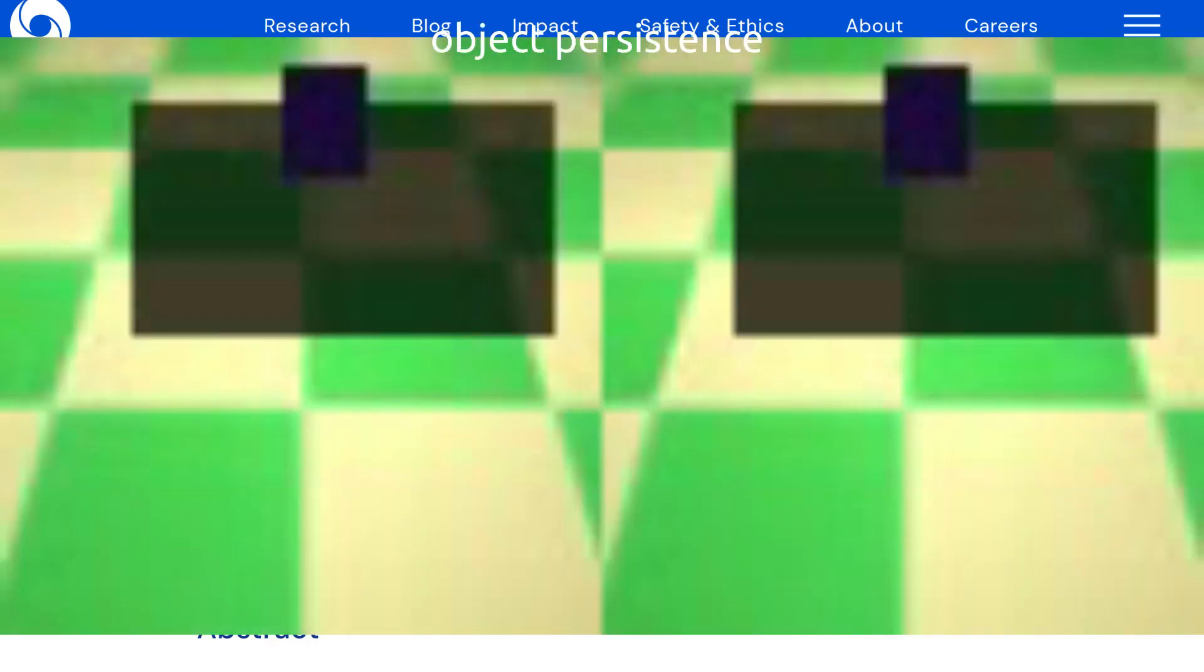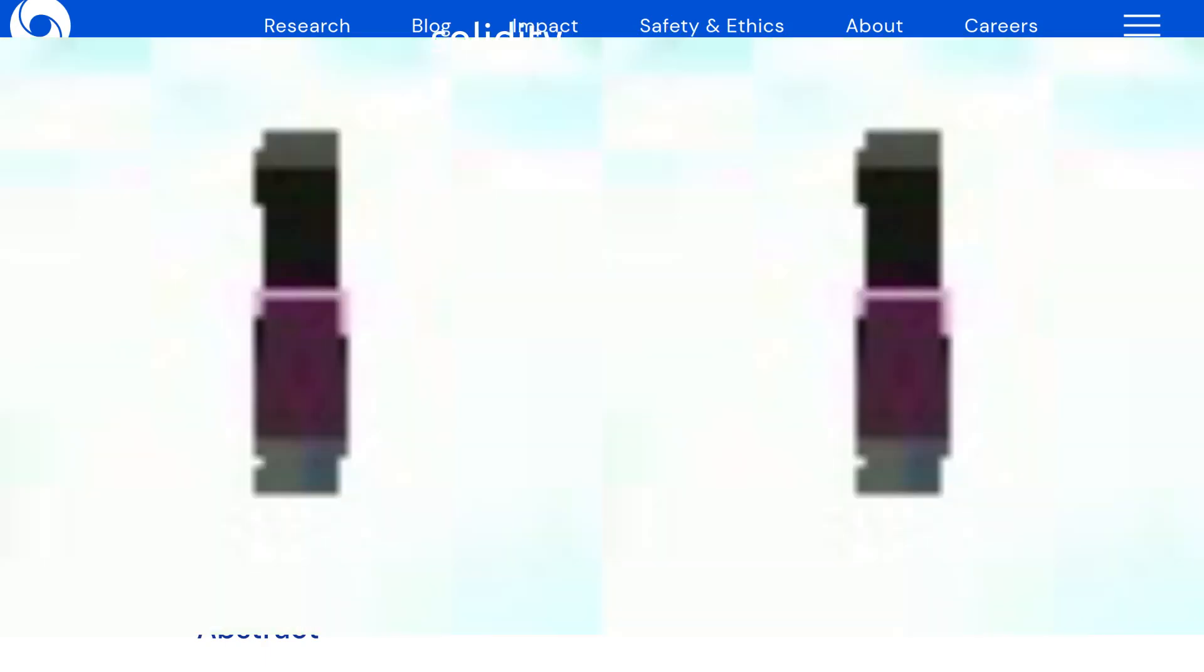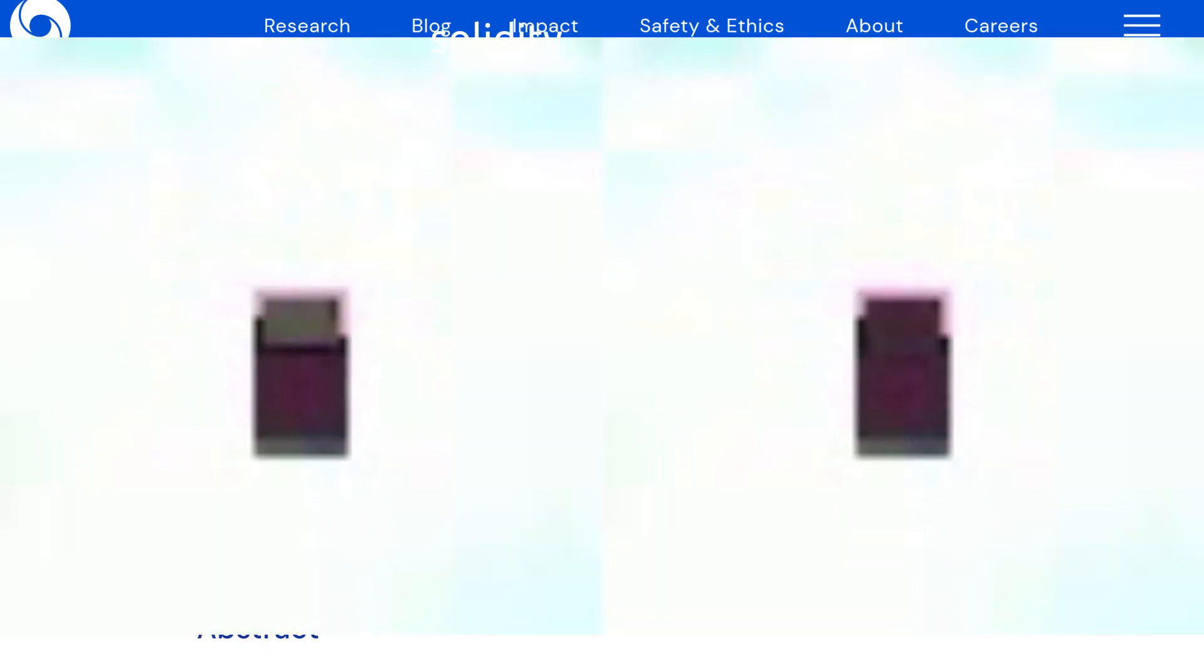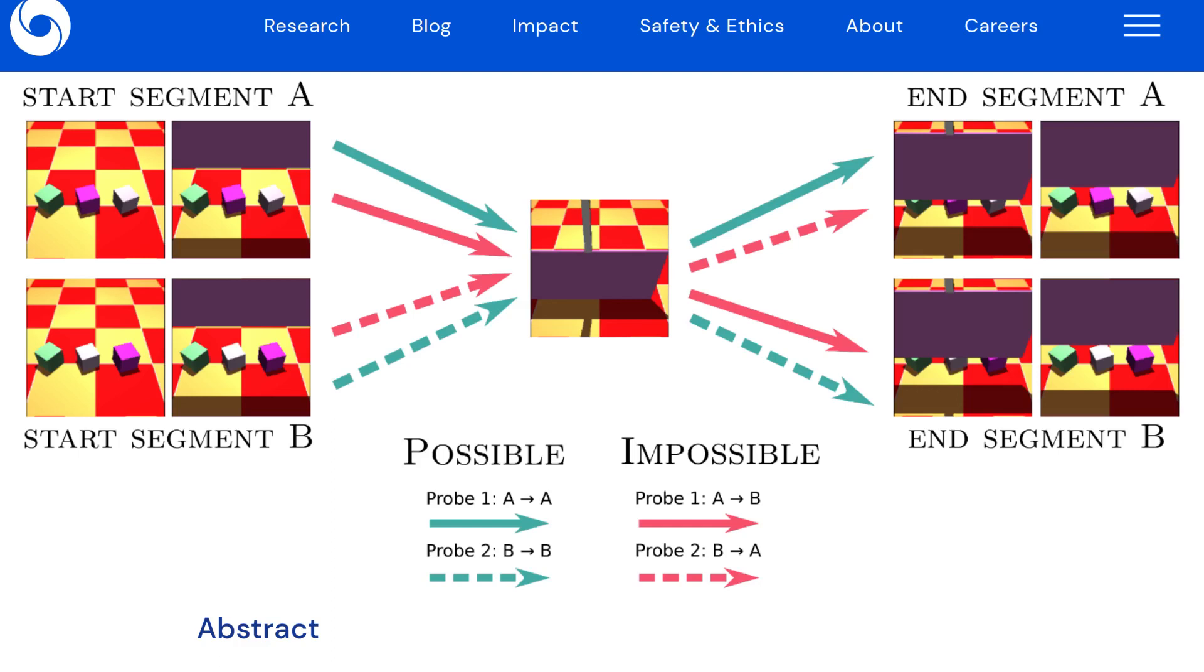For a human it's very easy to differentiate what is possible and what's impossible in these video clips. On the left side you see a possible environment and on the right side you see something that's impossible. But it's very interesting how an AI can learn the difference between these two concepts.